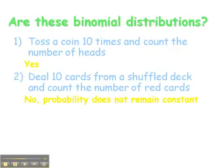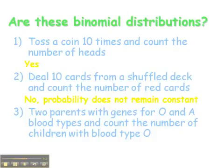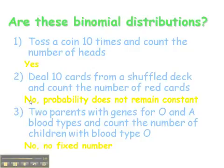Example three: two parents with genes for O and A blood types — we want to count the number of children with blood type O. Each trial has two mutually exclusive outcomes: either a success (type O blood) or a failure (not type O). However, there is no fixed number of trials specified anywhere. We're not measuring successes out of a particular fixed number, so this does not qualify as a binomial distribution either. We have to be very careful about meeting all the criteria.